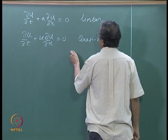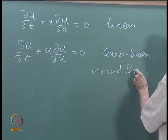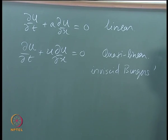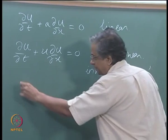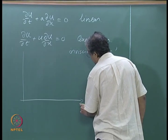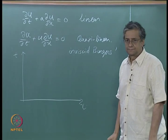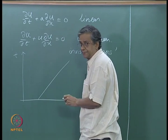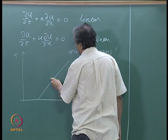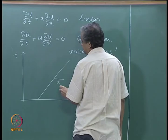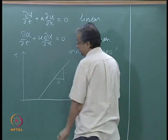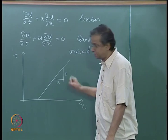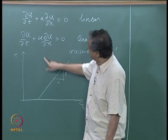It could also be called the inviscid Burgers' equation. When we talk about this equation, we realize the importance of characteristics. In the xt-plane, we saw that characteristics had slope a — meaning slope 1/a in this coordinate system — so whatever we were doing was propagating at speed a in unit time. In this case, the propagation speed is u.